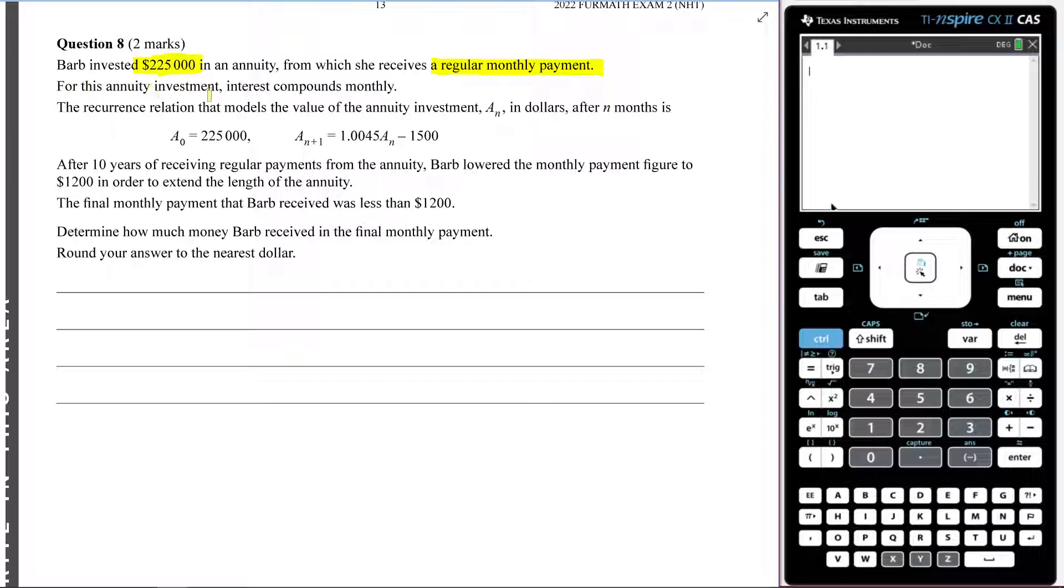So what you're going to do is you're going to earn compounding interest off that, but also you're going to take out money that you're going to live off during your retirement. And that's what we continue to read here. For this annuity investment, interest compounds monthly. The recursion relation that models the value of the annuity, A of N, in dollars after N months is this.